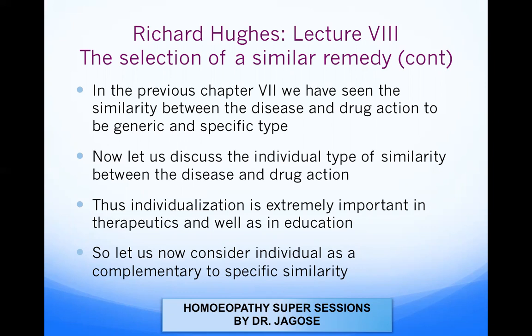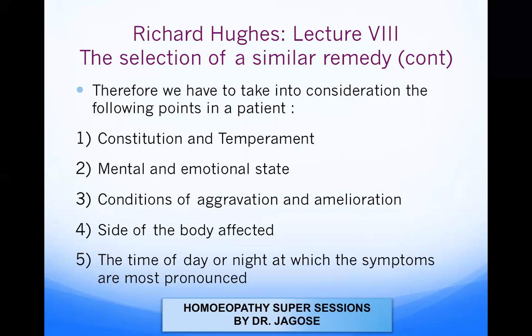Let us now consider the individual type of selecting a remedy as complementary to specific similarity. Specific similarity is according to the characteristic symptoms, and the individual method is a complement to it. For individual similarity we have to take into consideration five points: constitution and temperament, mental and emotional state, conditions of aggravation and amelioration, side of the body affected, and the time of day or night at which symptoms are most pronounced.